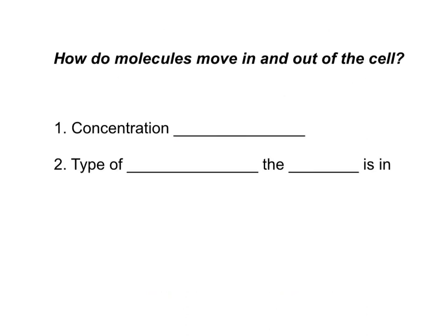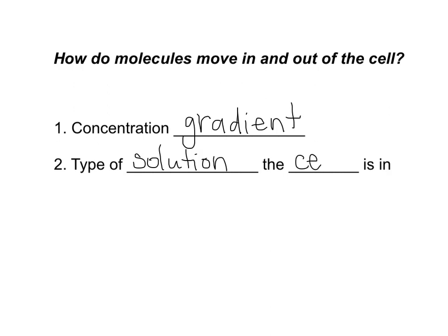So how do molecules move in and out of a cell? There are two things that dictate how molecules are going to move. The very first one is called the concentration gradient, and the second is the type of solution the cell itself is in. These two things kind of go hand in hand, but we're going to break them down because they're slightly different.